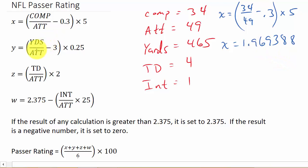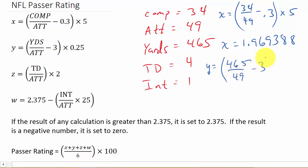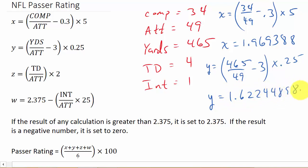Next we calculate Y. We have 465 yards over 49 attempts, minus 3, and then all of that times 0.25. Punch that into your calculator and you get Y equals 1.62244898.